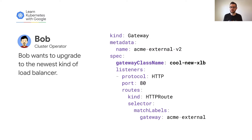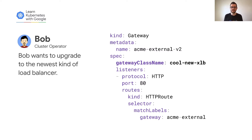Bob has learned about a cool new XLB that is both way more performant and cost effective. He can easily test it out with all the existing routing configuration by creating a new gateway that can run in parallel with the existing one. He doesn't need to recreate the routing configuration and none of the existing routes need to be updated — it just works. Once he determines that the new gateway is working well, he can easily and safely promote it to production.